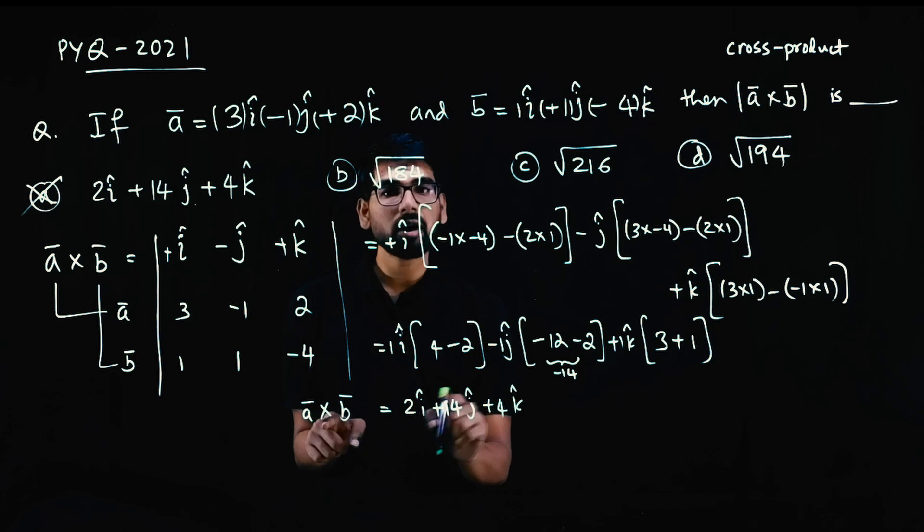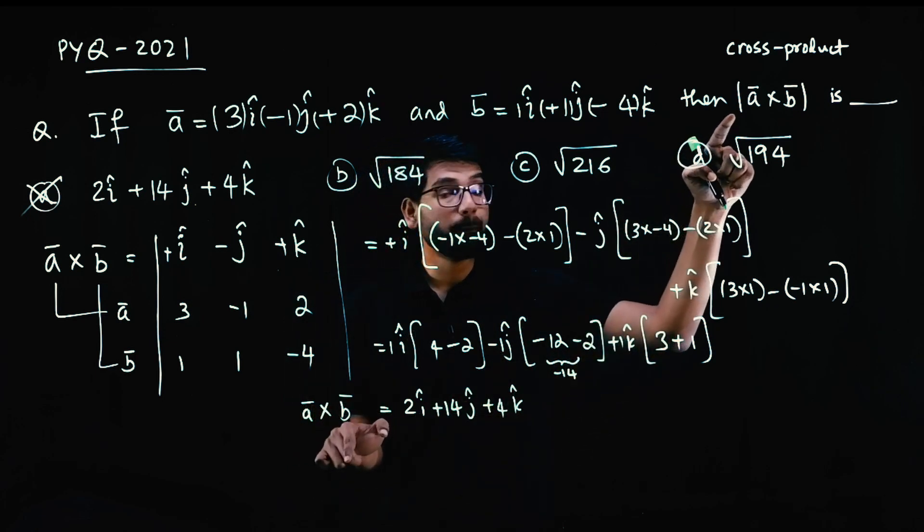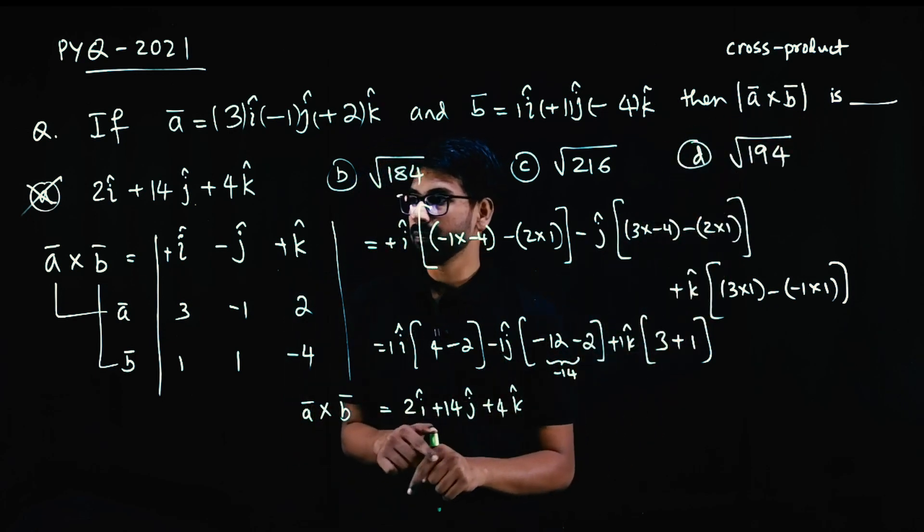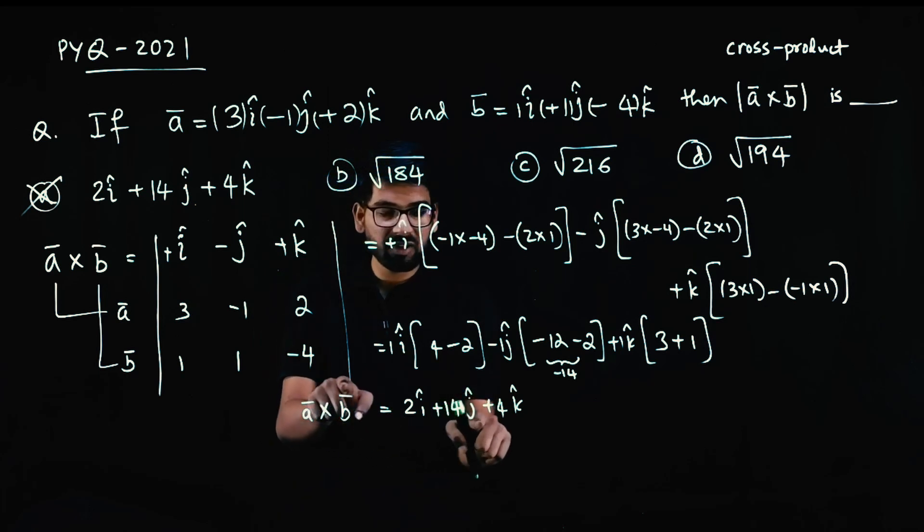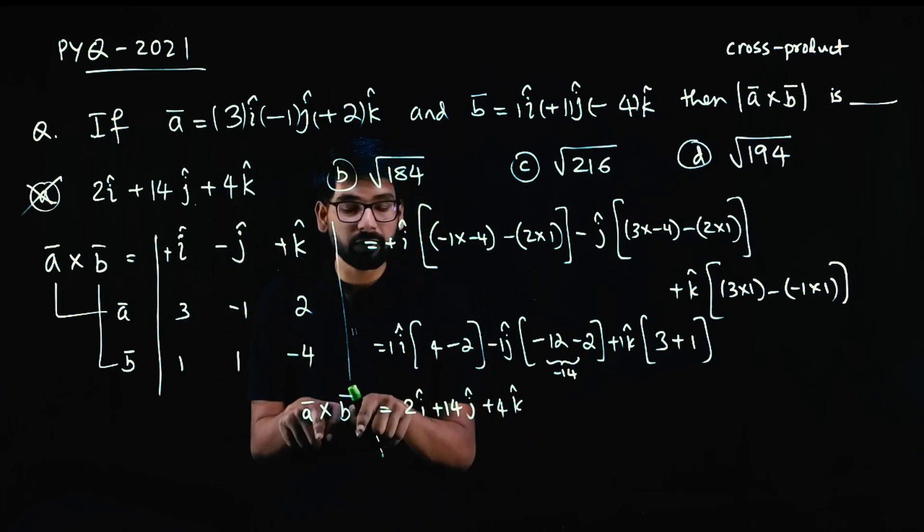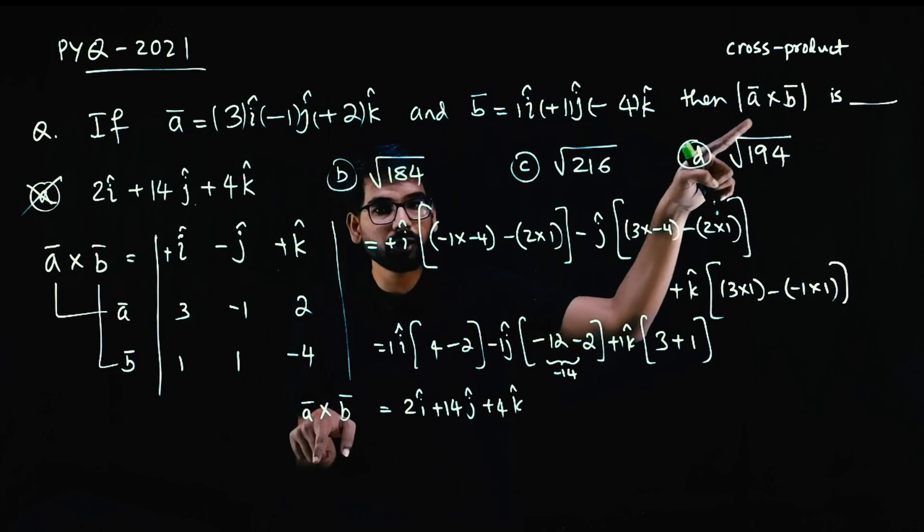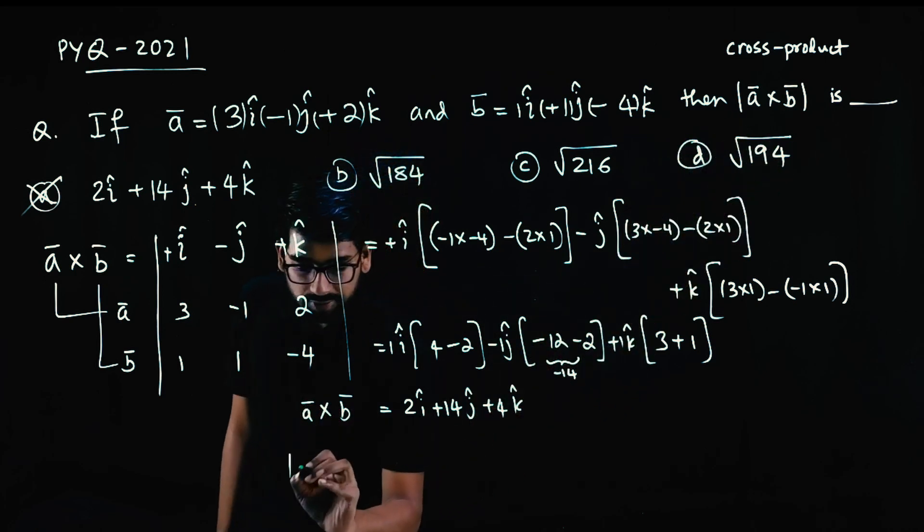So A bar cross B bar vector is i, 4 minus 2 is 2i cap. Minus 12 minus 2 is minus 14, minus into minus 1 will be plus 14j. 3 plus 1 is 4K. This is the vector A bar cross B bar. We need the magnitude of this vector.